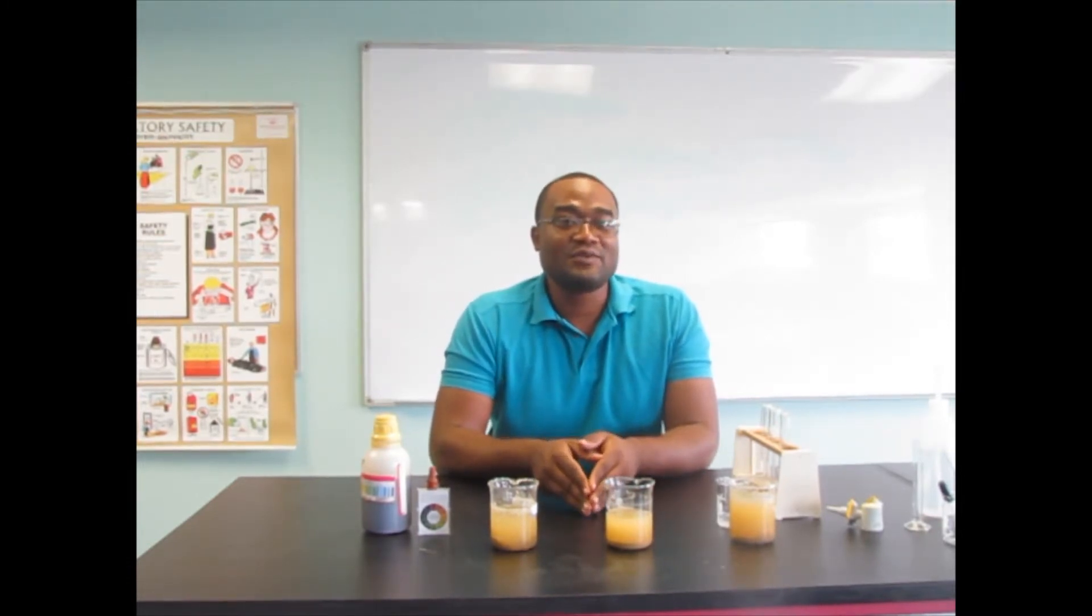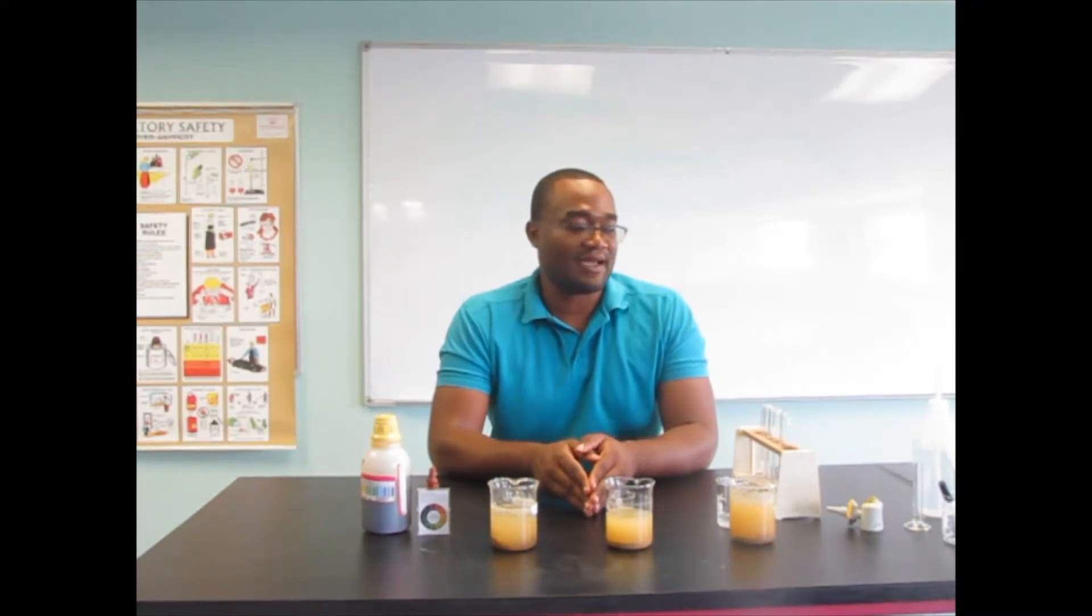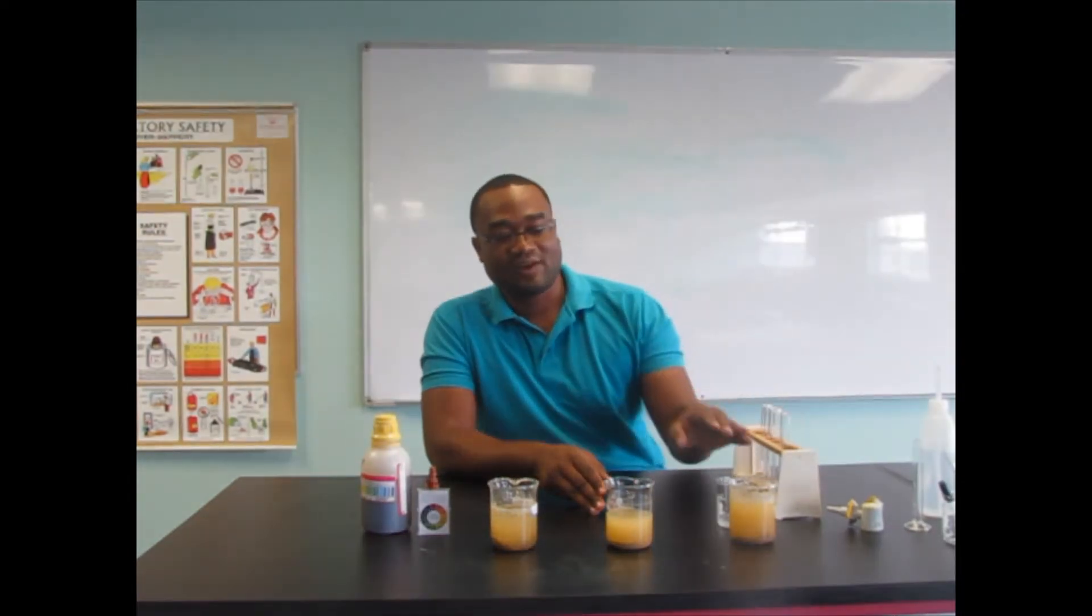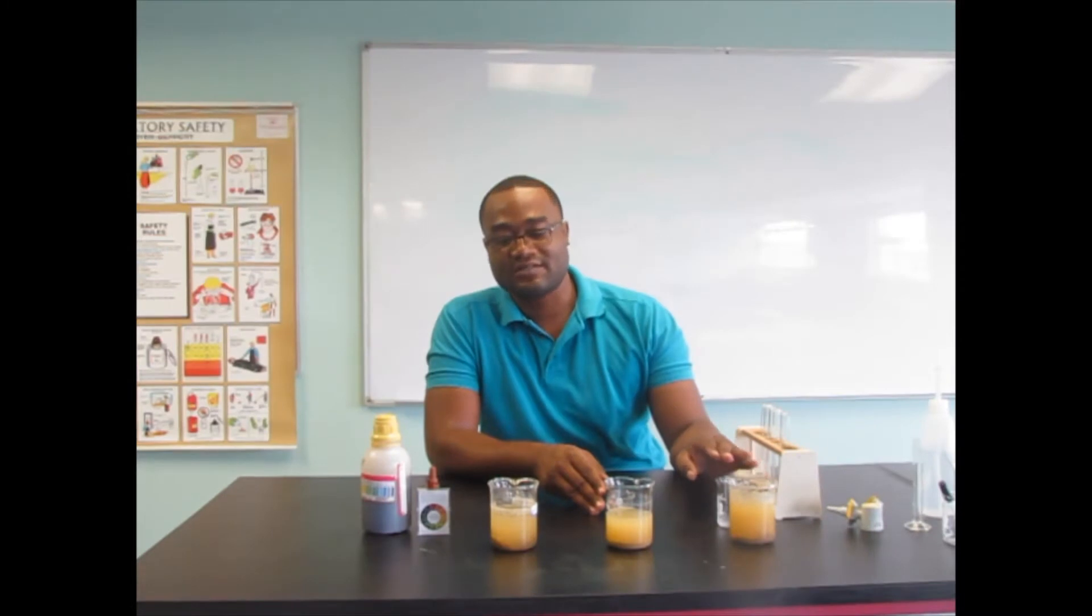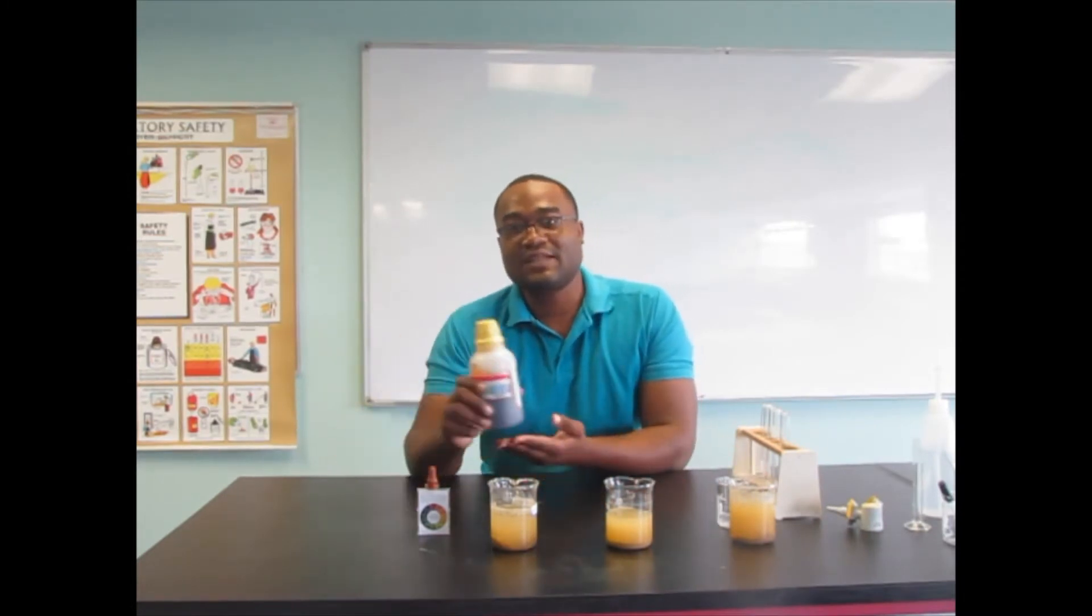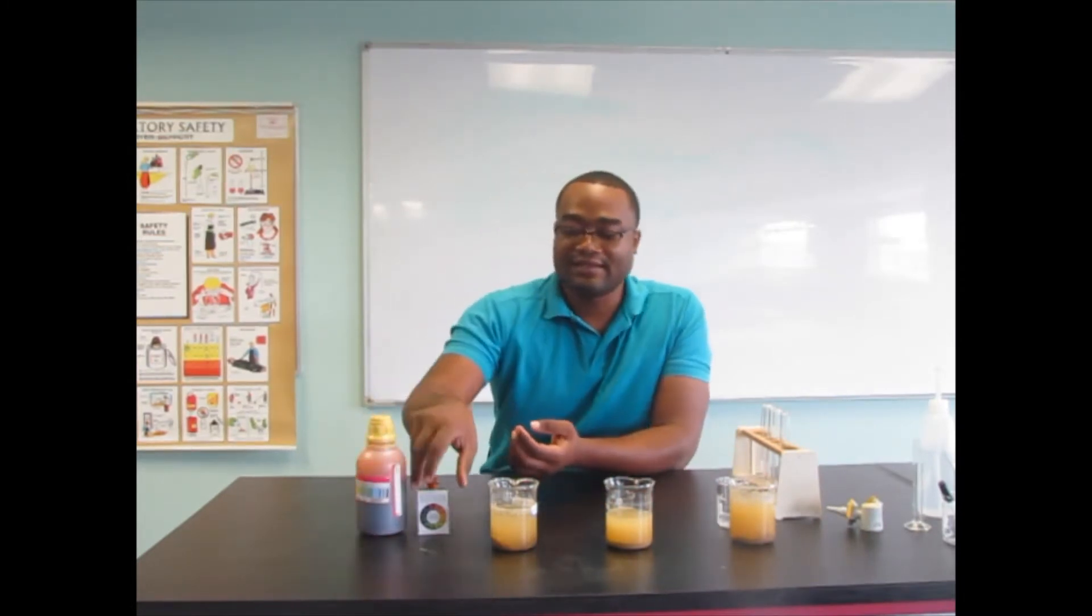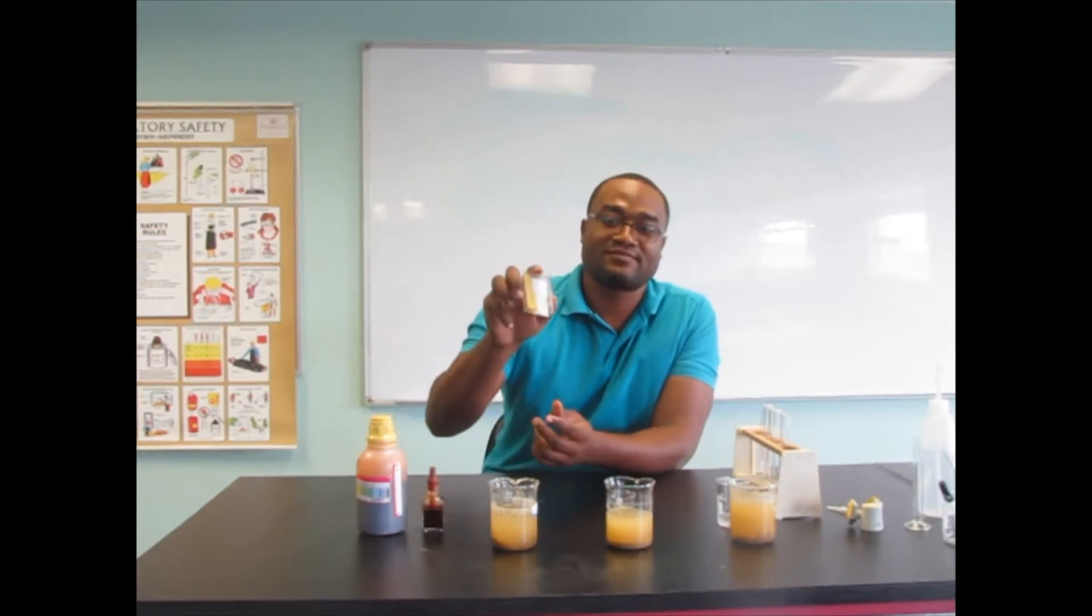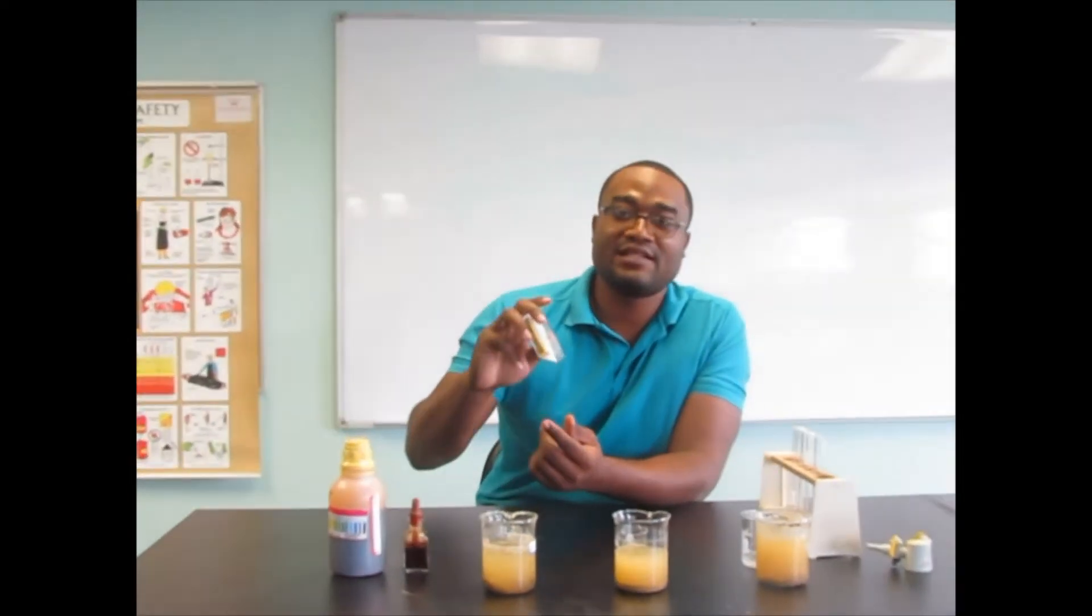What we are going to need to do our pH test are our test tubes, our beakers with soil solutions, the universal liquid indicator and the litmus strips. This is also a universal indicator as well.